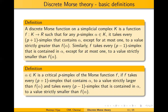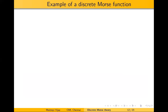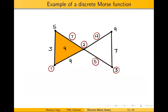A p-simplex α in K is said to be critical if every coface β for which α is a co-dimension-one face satisfies f(β) > f(α), and every face γ that is a co-dimension-one face of α satisfies f(γ) < f(α) — meaning there are no violations around α. Here is a small example: the one-simplex labeled 7 is critical because its two faces 5 and 2 are both less than 7, and its coface 9 is greater than 7. The one-simplex labeled 9 is not critical because it equals the value of its coface two-simplex, which is a violation.